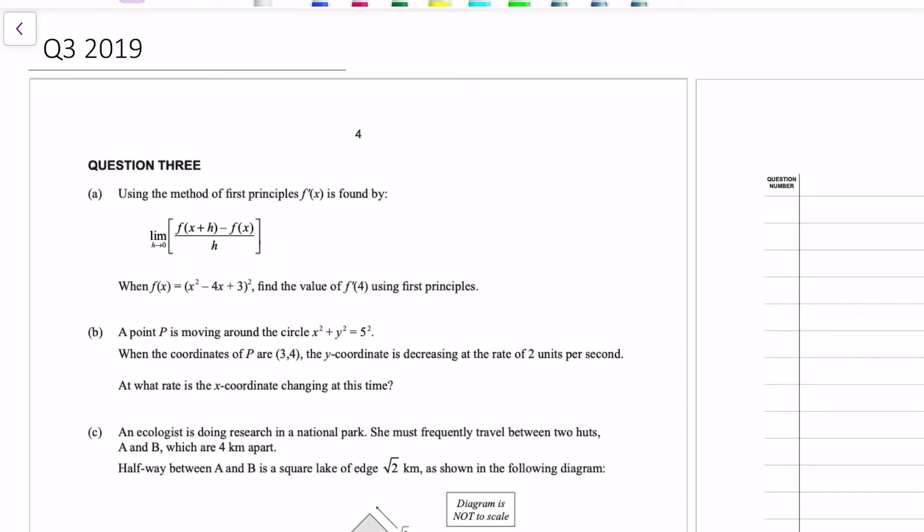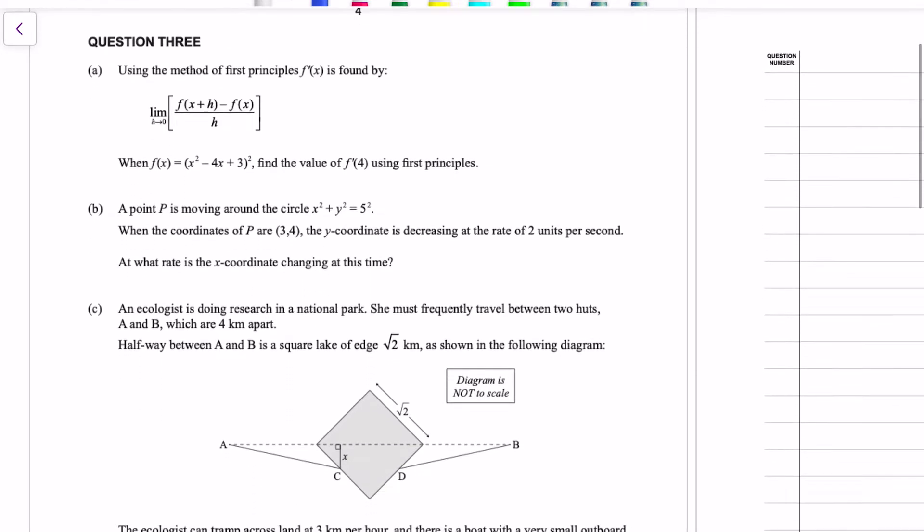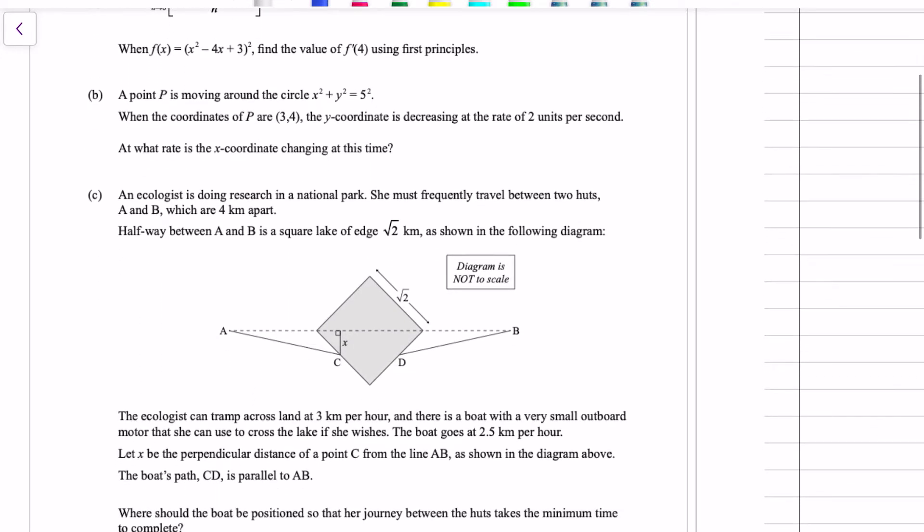Kia ora and welcome to this video on question 3 of the 2019 Scholarship Calculus exam. Part A is differentiation by first principles, a nice short problem. Part B is a related rates question, also a nice short problem. And then question 3C is a very contrived optimization problem about an ecologist going for a tramp and planting a boat in a lake to save less than a minute to their journey. So I hope you enjoy it and get stuck into it.